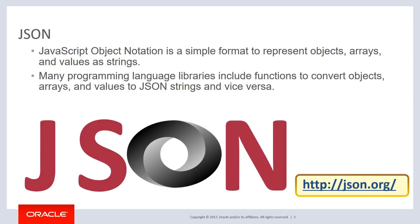JSON supports a lot more than just name-value pairs — you can do objects, arrays of objects, arrays of arrays, and objects with arrays. There are many combinations, making it quite flexible and very powerful. Many languages today support it; just about every programming language has really good JSON libraries. You can get more information at json.org.